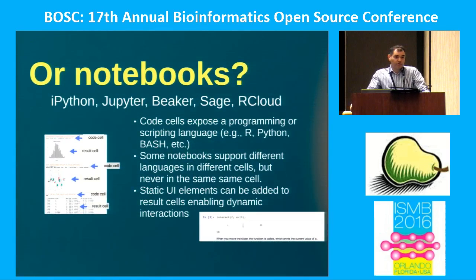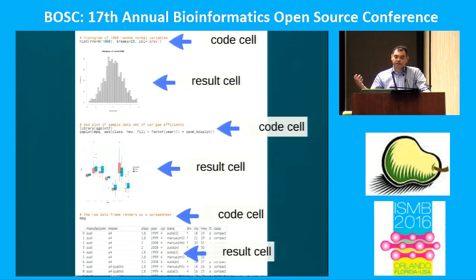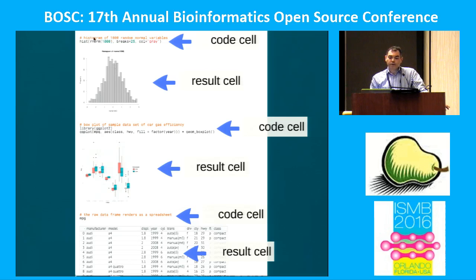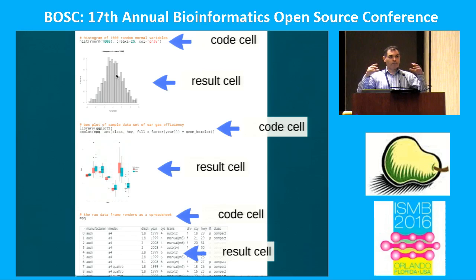What about electronic notebooks? This space is getting crowded — there's iPython, Jupyter, Beaker, Sage, Rcloud, and more. Those tools are usually web-based user interfaces with a succession of cells: code and result. In the code cell you write programming language code, and in the result cell you see its evaluation. This is very useful for beginners because they can type some code, grasp some syntax, and immediately see what it does.